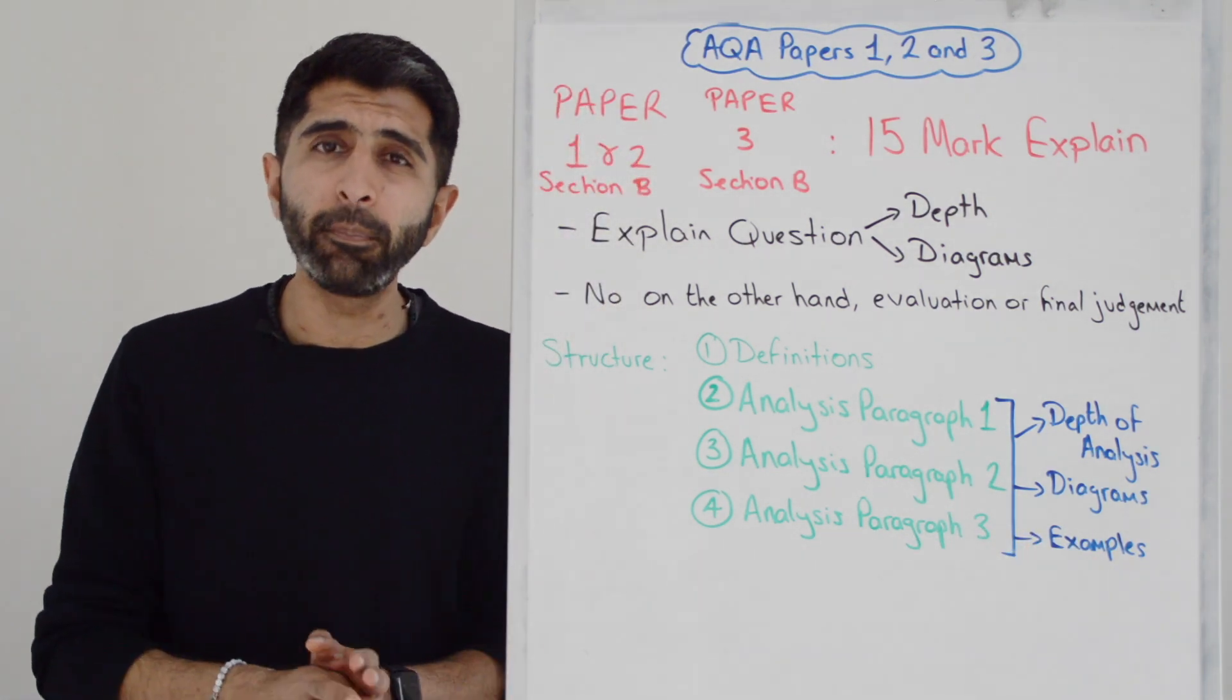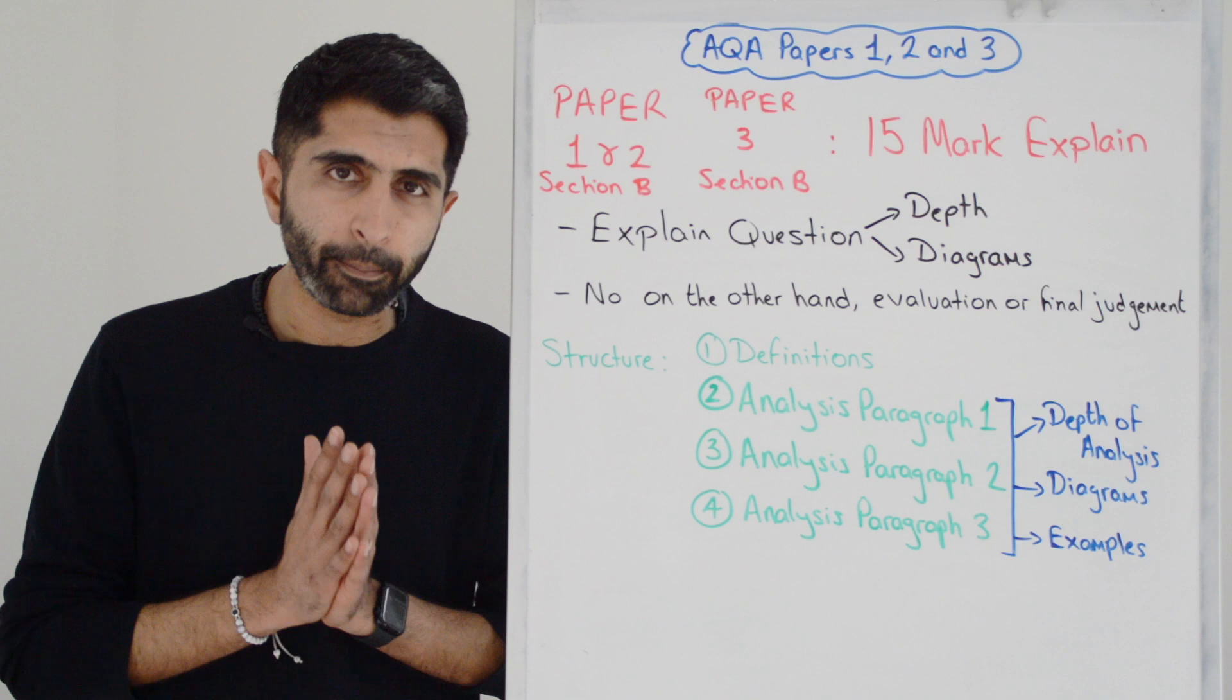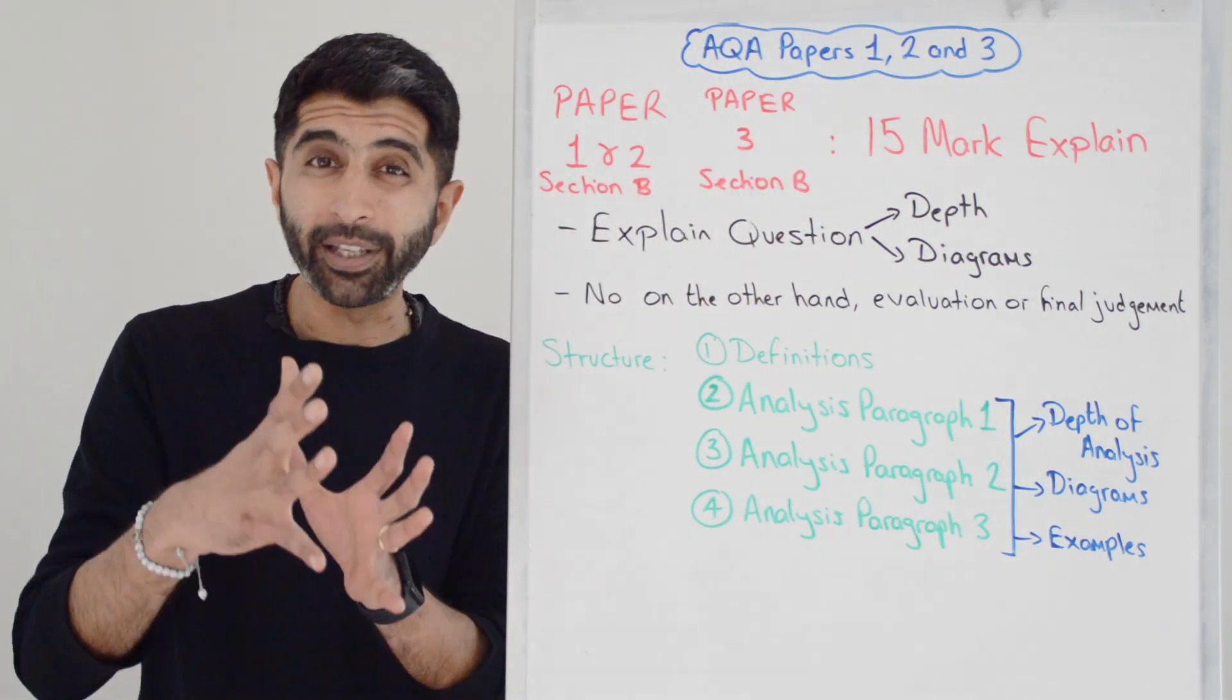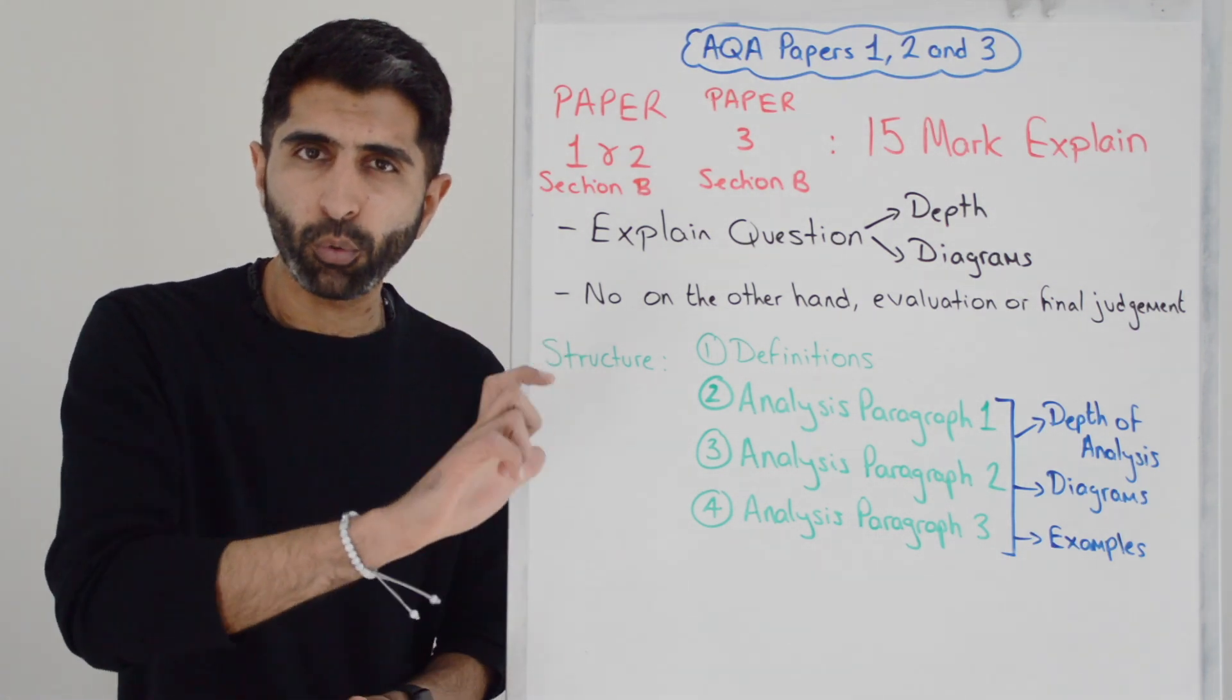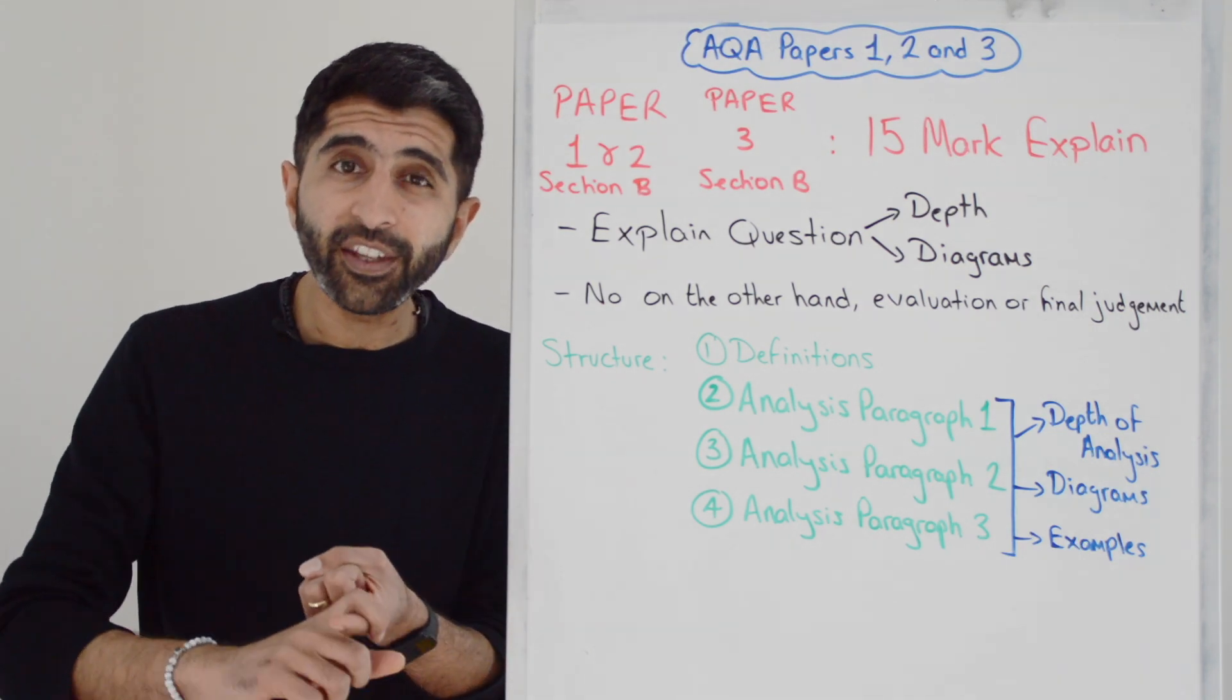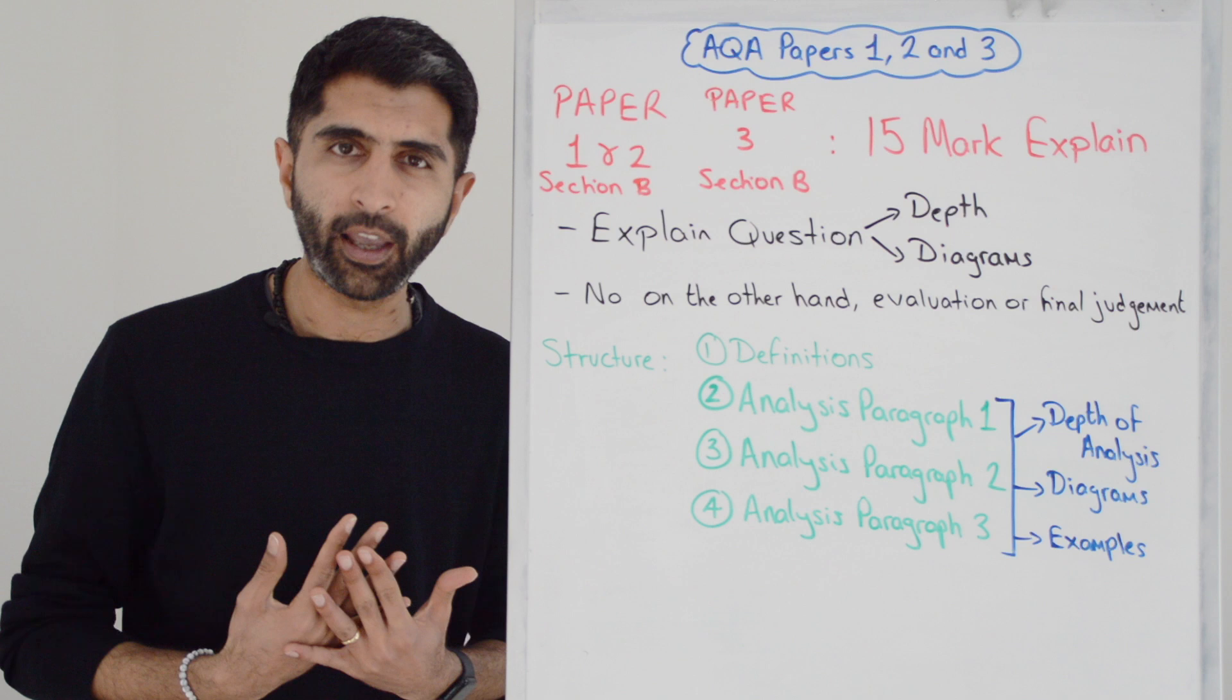And yes, the expectation is in Section B of Paper 1 and Paper 2, you need your own real-world examples to back you up. Not in Paper 3, because in Paper 3, Section B, your 15-marker there will be tied to extracts. So, real-world examples you can get from the extracts, quote there, and that would be great. But in Paper 1 and Paper 2, Section B, your 15 and 25-marker, you need your own real-world examples to back up what you're saying.